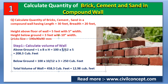The width of the wall above ground is 5 inches, so we divide by 12 to convert to feet — because 1 foot equals 12 inches. The height above ground is 5 feet. So volume above ground = 100 × (5/12) × 5 = 208.3 cubic feet.